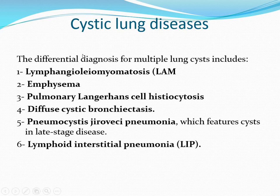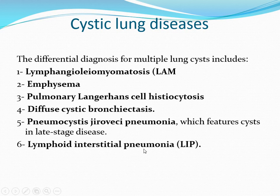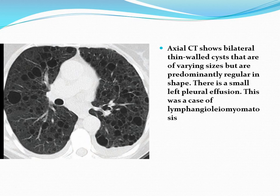Cystic lung disease is usually due to airway abnormality. The differential diagnosis of multiple lung cysts includes lymphangioleiomyomatosis, emphysema, pulmonary Langerhans cell histiocytosis, diffuse cystic bronchiectasis, pneumocystis jirovecii pneumonia, and lymphoid interstitial pneumonia. Axial CT shows bilateral thin-walled cysts that are varying in size but regular in shape. There is a small left pleural effusion. This was a case of lymphangioleiomyomatosis (LAM).